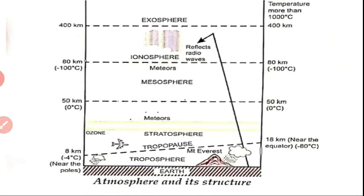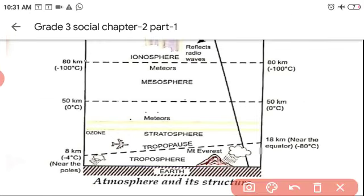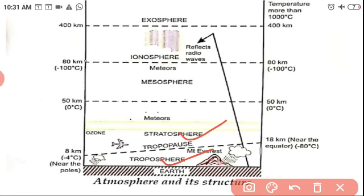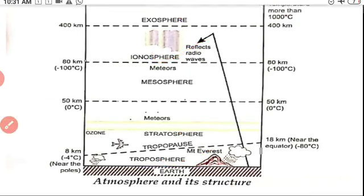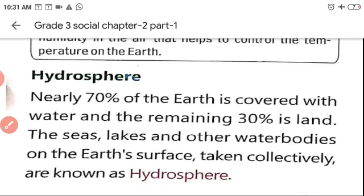The atmosphere consists of different layers. The first one is the troposphere, then the stratosphere, mesosphere, ionosphere, and exosphere: troposphere, stratosphere, mesosphere, ionosphere, and exosphere.